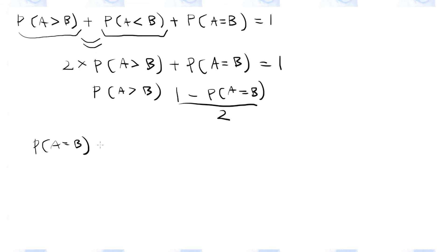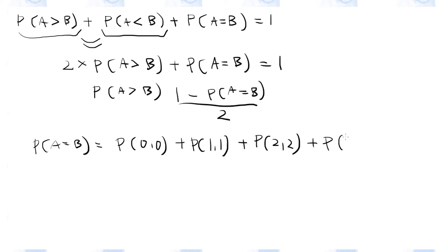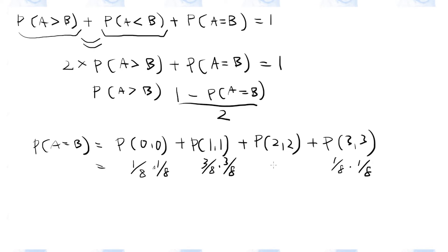A and B get the same scores when they both get 0 points, or they both get 1 point, or they both get 2 points, or they both get 3 points. The probability of A getting 3 tails is 1 over 8, and the probability of B also getting 3 tails is 1 over 8. The same can be said about the probability of them getting 3 heads. And the probability of them getting 1 head and 2 tails is 3 over 8 times 3 over 8, and similarly 3 over 8 times 3 over 8. That gives us 5 over 16.